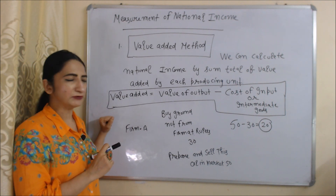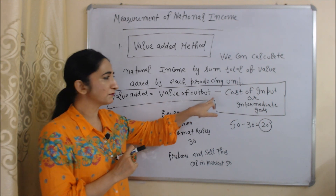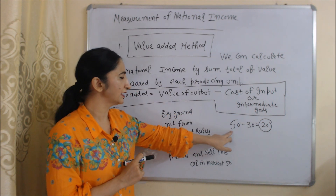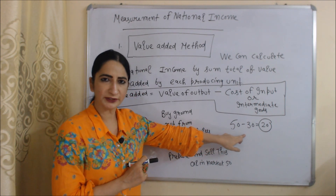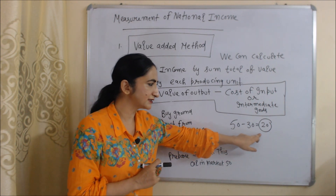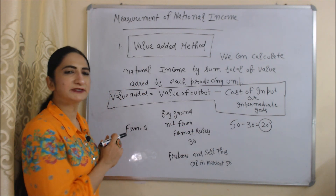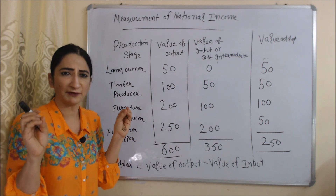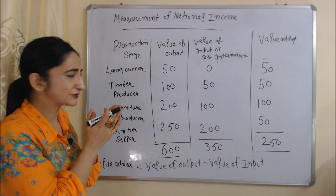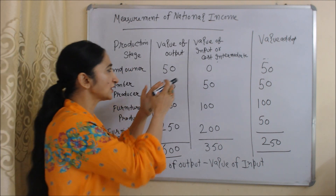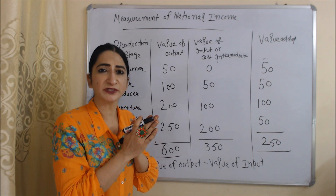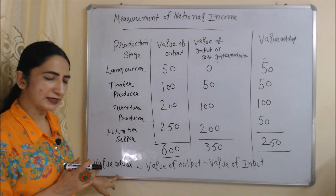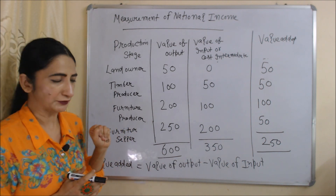50 minus 30 equals 20, so 20 rupees is the value added by this firm. The formula for calculating value added is: Value of Output minus Value of Input (or value of intermediate goods). Here our value of output is 50 and value of input is 30, so 50 minus 30 equals 20. Now with the help of a table we will clearly understand the value added method. Columns are: production stages, value of output, value of input (cost of intermediate goods), and value added.